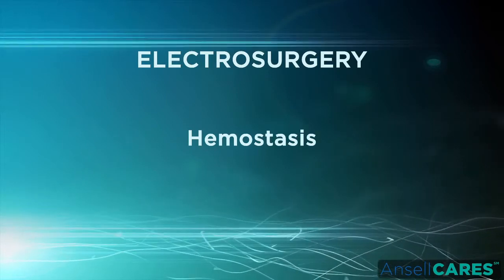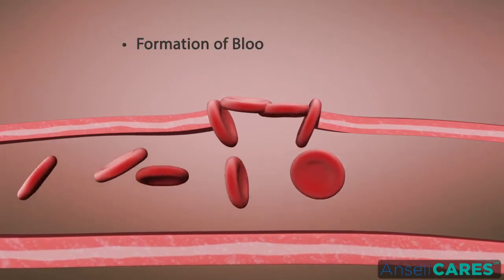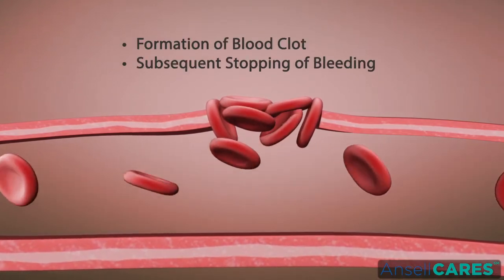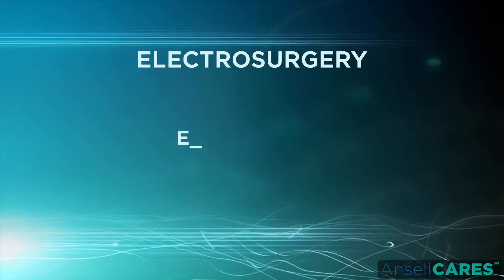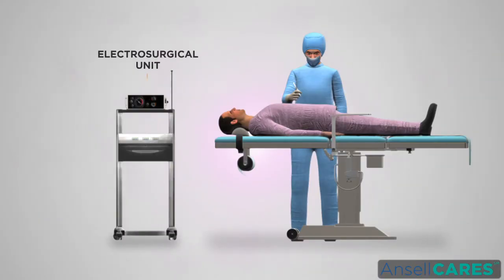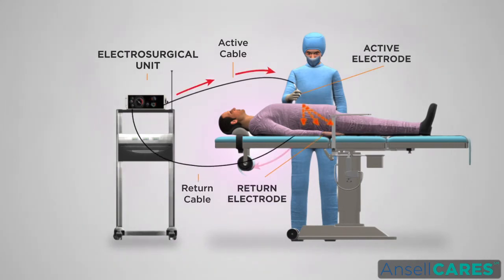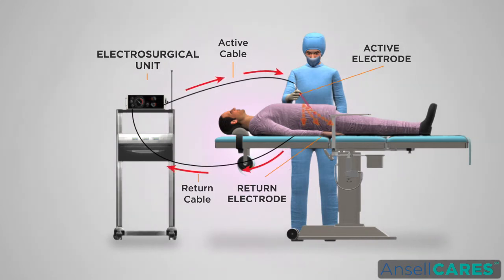Hemostasis is a process of formation of a blood clot and subsequent stopping of bleeding. Electrosurgery is the application of electrical current to biological tissue. A complete circuit must exist for electrical energy to flow. Three basic system components are needed: a power unit, an active electrode, and a dispersive or return electrode.